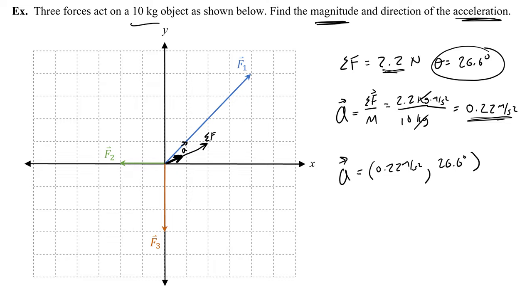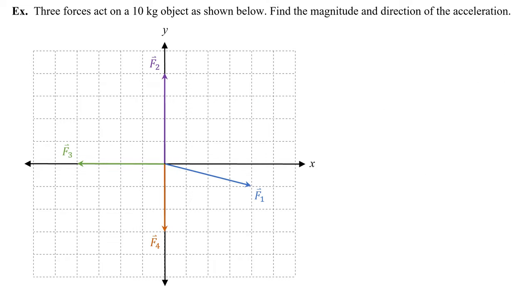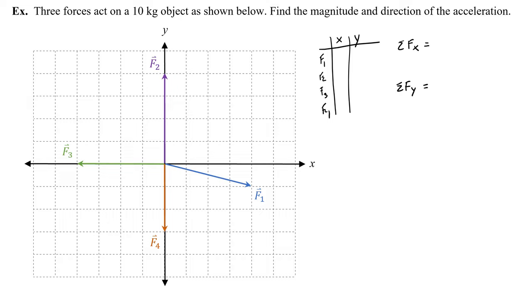Let's do another problem. Three forces act on a 10 kilogram object as shown below. Find the magnitude and direction of the acceleration. I'll make an x and y chart for F1, F2, F3, and F4. F1 goes over 4, so the x component is 4 newtons, and the y component goes down 1, so negative 1.